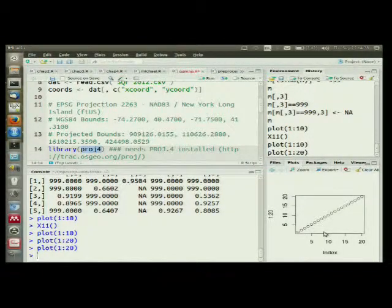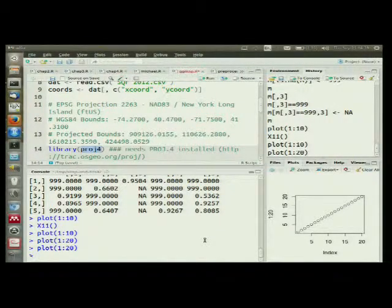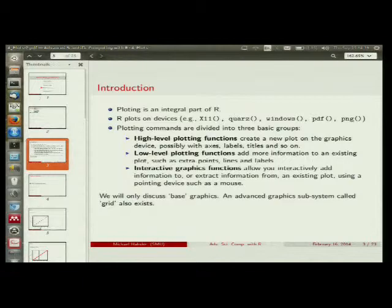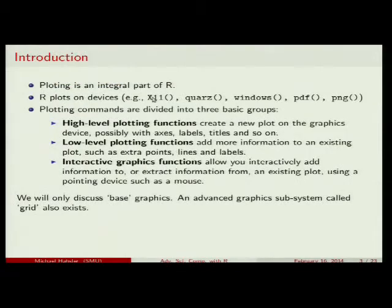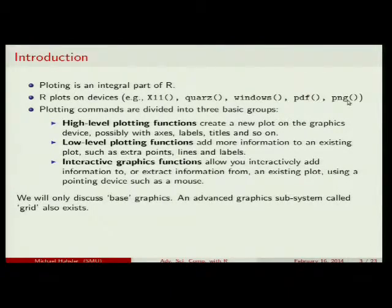Those devices are important because there are devices called, for example, PDF. You can open a PDF device, plot to your PDF device, close it, and what it does is plot actually into a file as a PDF. Or a PNG or a JPEG or other things. The devices are X11 for Unix. If you use a Mac, this device is called Quartz because that's the visualization engine that Apple operating systems use. If you have Windows, you say Windows and it will open a new Windows device. If you open a PDF device, you need to give it a file name — it will write a PDF file, a PNG, JPEG, TIFF, SVG for vector graphics.